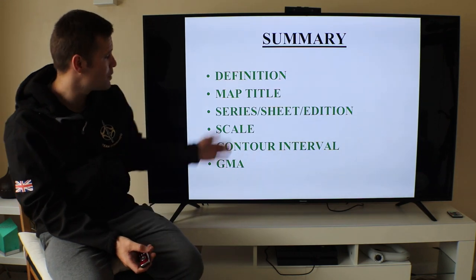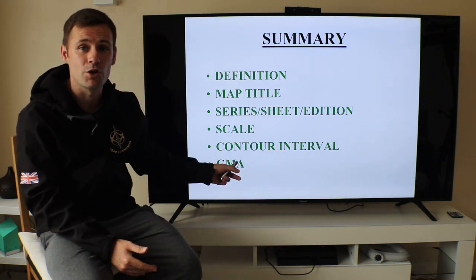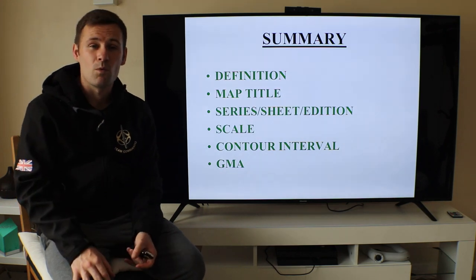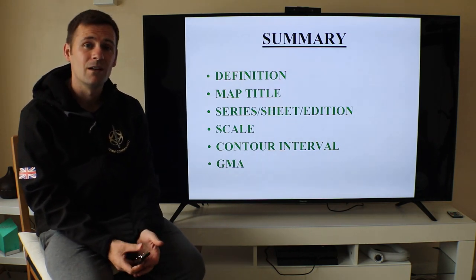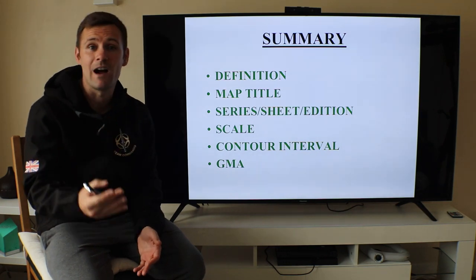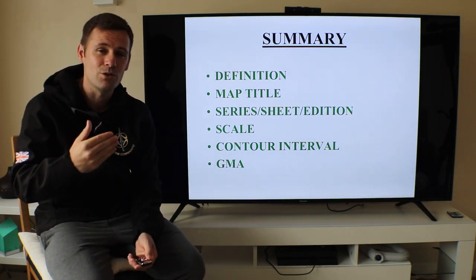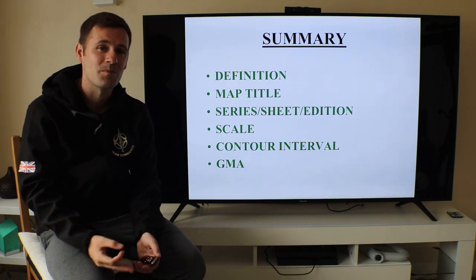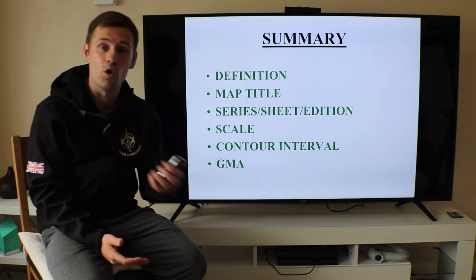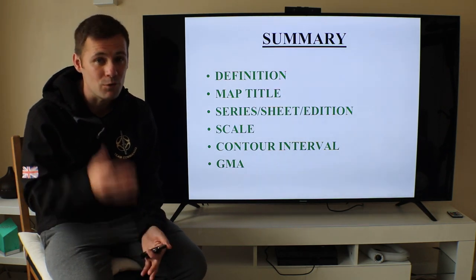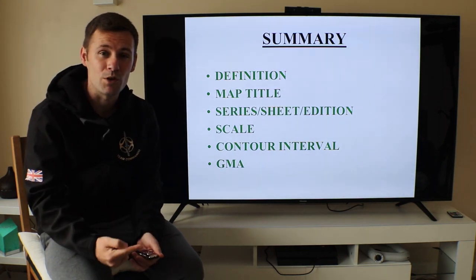V is for Value — your contour interval or contour value. On a 1:50,000 map each contour interval is 10 metres; on a 1:25,000 map they've changed to 5 metres. You must check this. If you assume 10 metres but you're on a 1:25,000 map, the hill will be half the height you calculated. On Norwegian maps the contour interval is 20 metres, so if you assume 10 metres the hill is double the height you planned. Always check your contour interval.